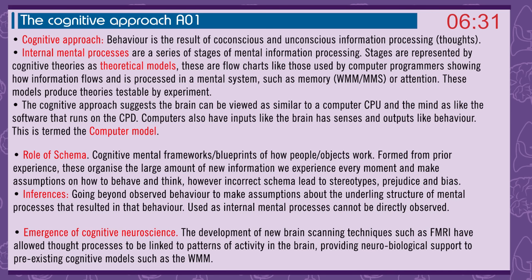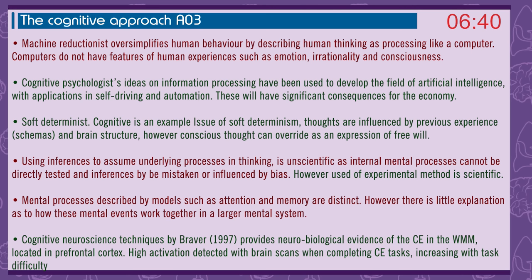Emergence of cognitive neuroscience: the development of new brain scanning techniques such as fMRI have allowed thought processes to be linked to patterns of activity in the brain, providing neurobiological support to pre-existing cognitive models such as the working memory model. Machine reductionism: the approach oversimplifies human behaviour by describing human thinking as processing like a computer — computers do not have features of human experience such as emotion, irrationality, and consciousness.